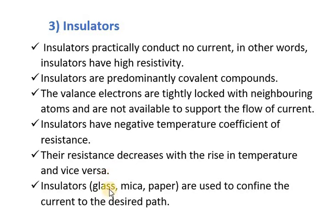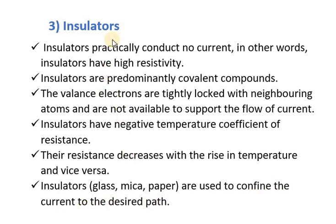Insulators like glass, mica, and vapor are used to confine the current to the desired parts. Insulators are specially made to oppose and stop the electric current. In power systems, various types of insulators are used to protect conductors and oppose the current.